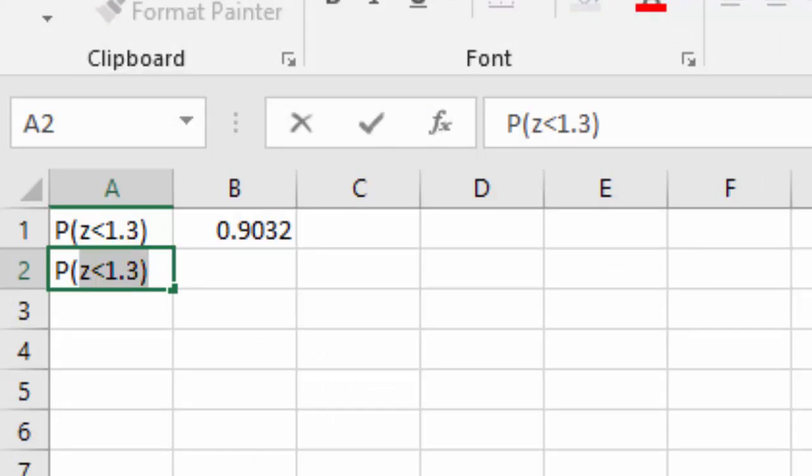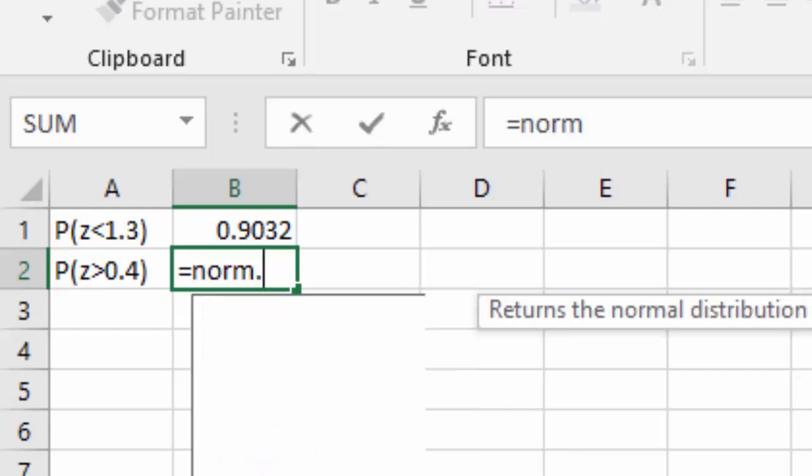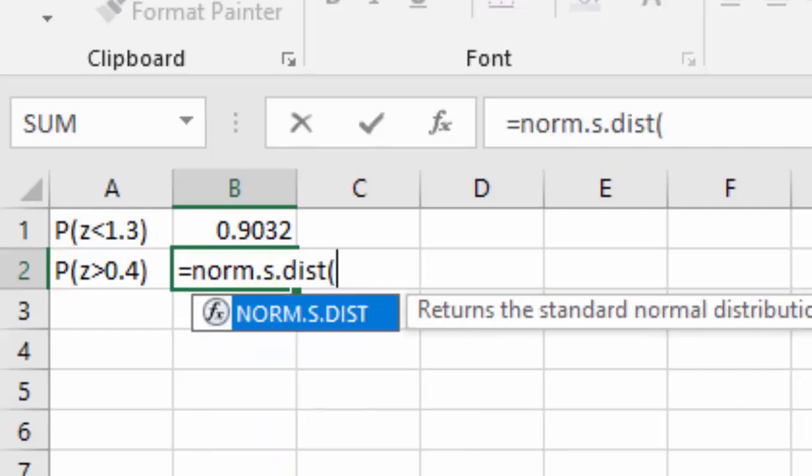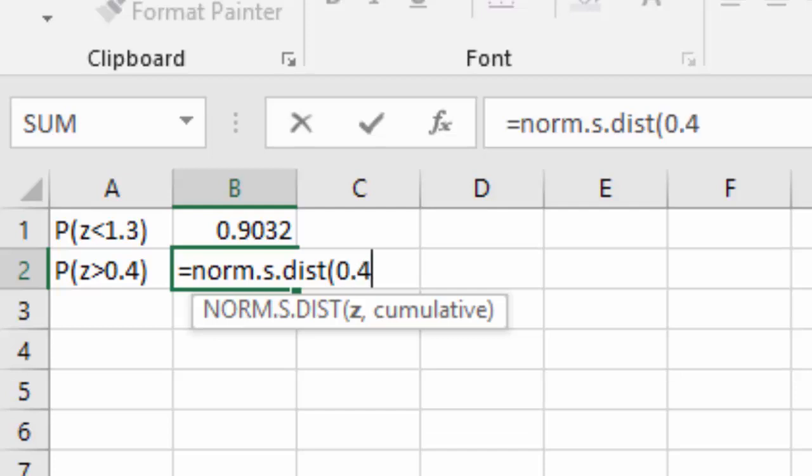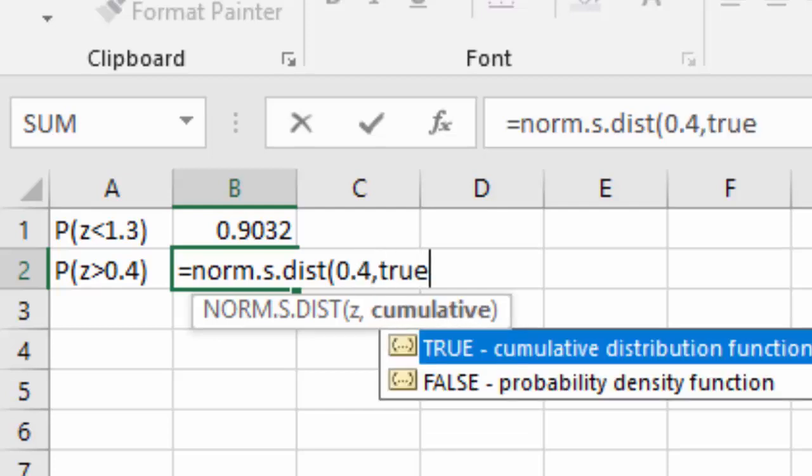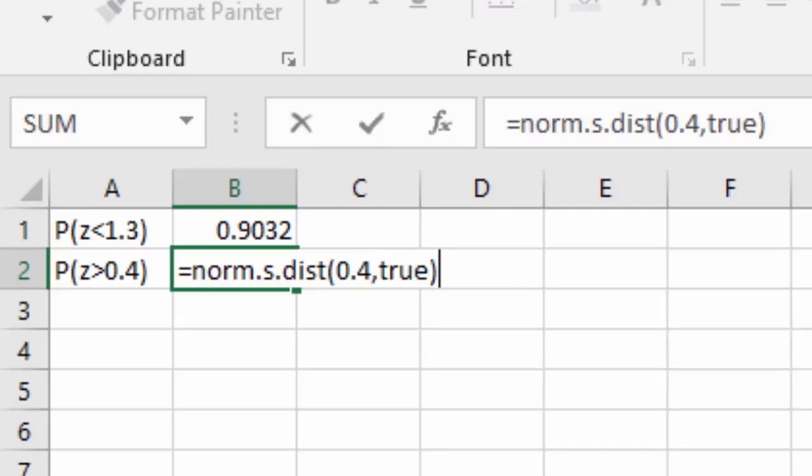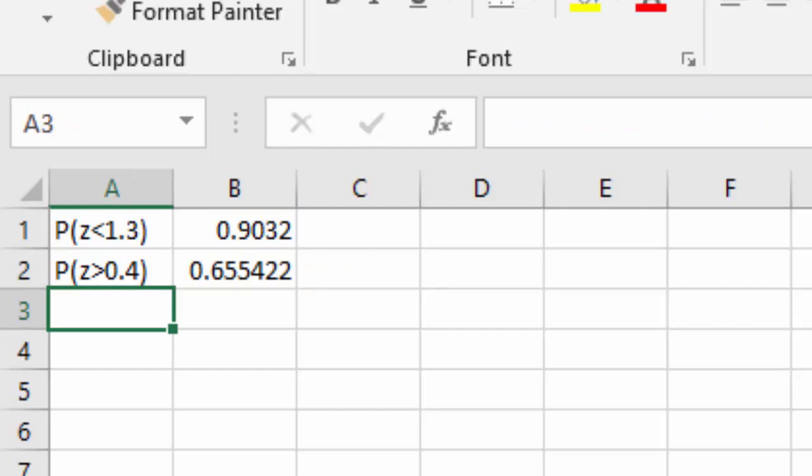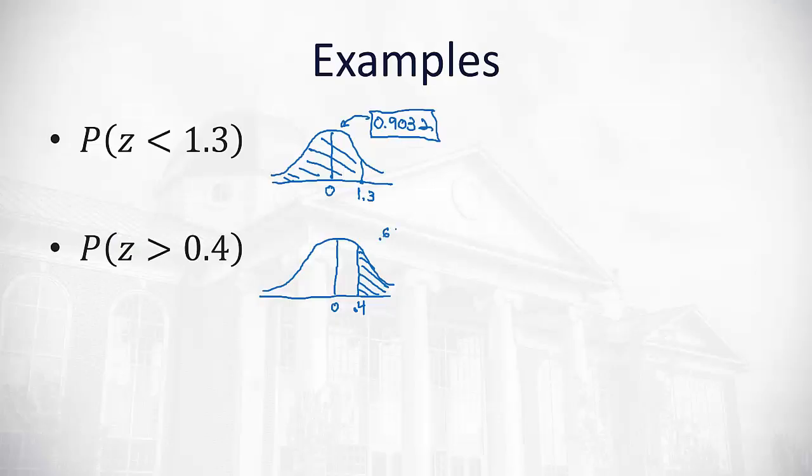We want the probability that z is greater than 0.4. First we'll hit equals norm.s, for standard, distribution. The z value is 0.4, and for cumulative we will say true. And this is going to give us 0.65, let's round to four digits, 0.6554.